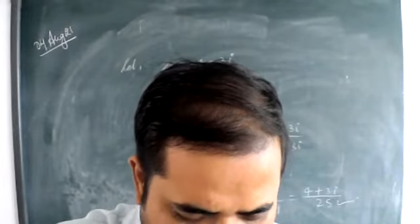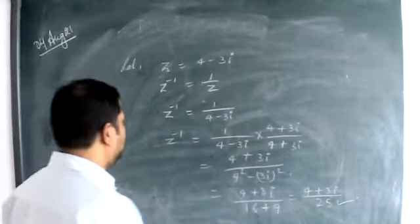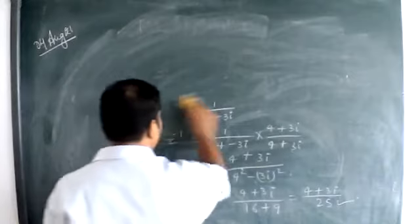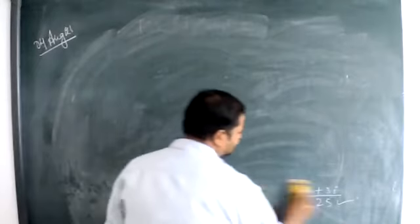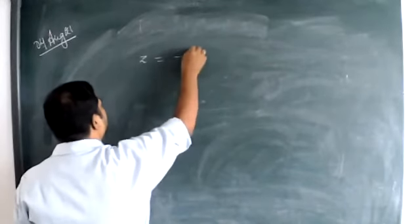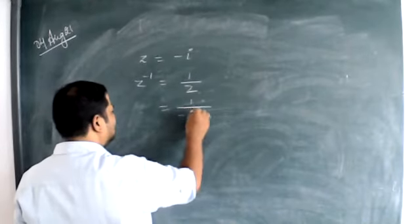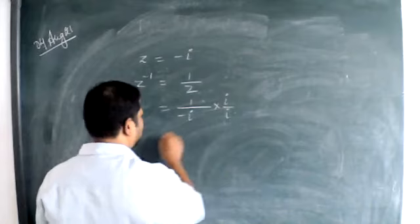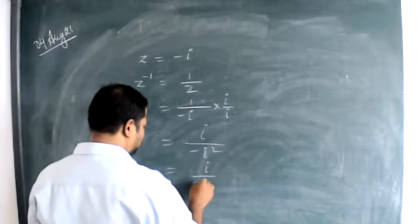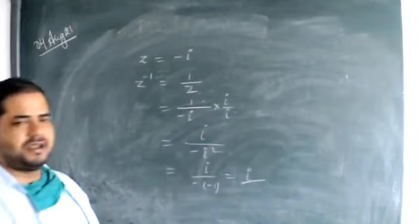Now find the multiplicative inverse of minus i. So z equals minus i. Then z inverse is 1 upon z, which is 1 upon minus i. Multiply numerator and denominator by i: this gives i over minus i squared. Since i squared is minus 1, we get i over minus of minus 1, which is i over 1. So i is the multiplicative inverse of minus i.